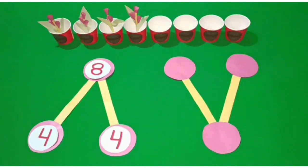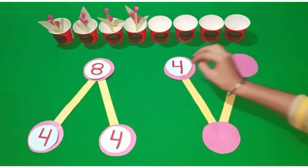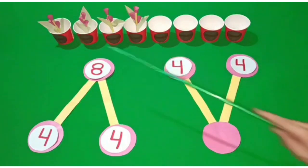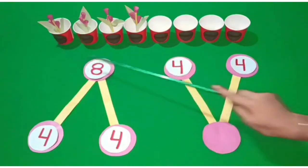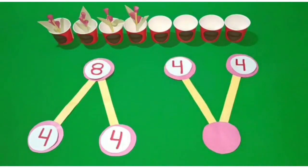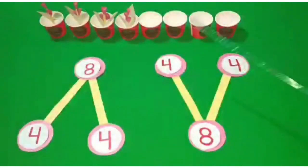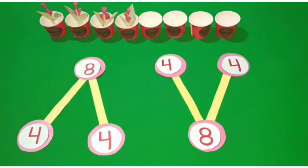How many pots have flowers? 4 pots. How many pots do not have flowers? 4 pots. See, how many pots are there in all? There are 8 pots. 4 and 4 are 8 in all.